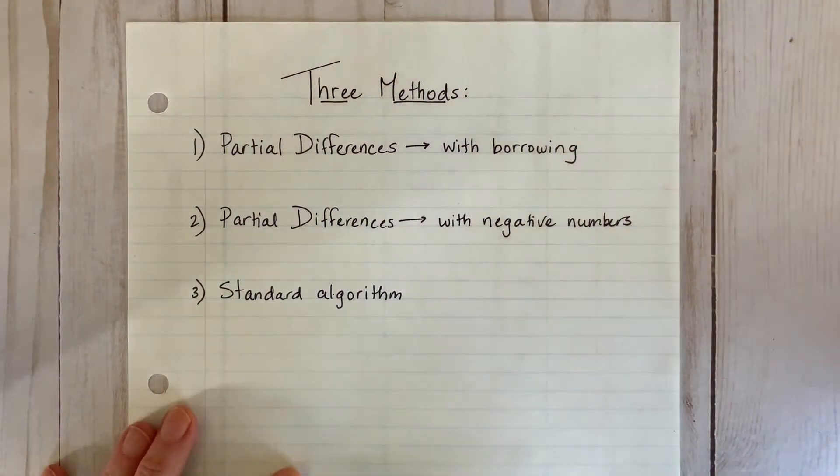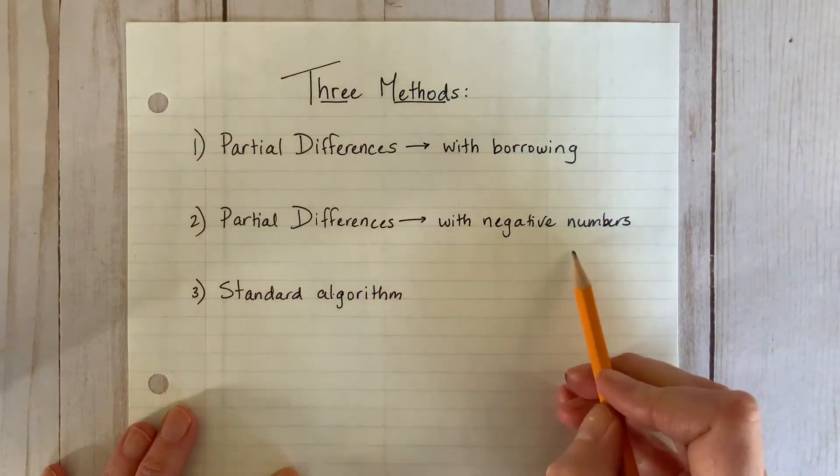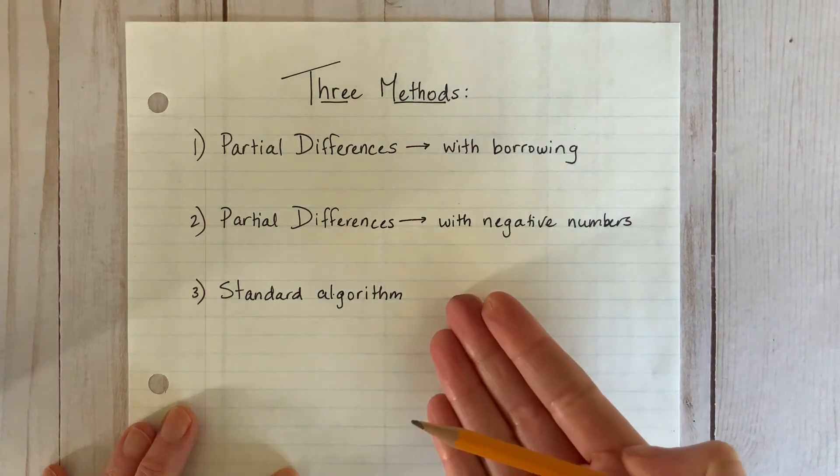I'm going to show you three different methods: partial differences with borrowing, partial differences with negative numbers, and the standard algorithm.